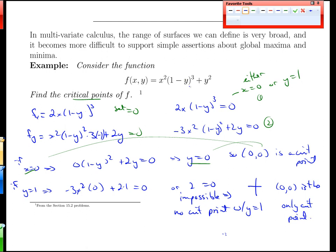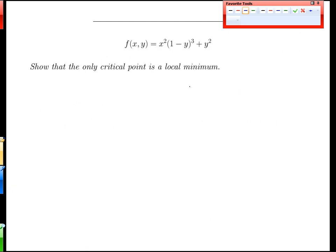Okay, so we have a function with a single critical point at the origin. What could be simpler? Let's take a look at what else we can say here. Let's show that that point is a local minimum. Show that the critical point is a local minimum. Well, for that, we need our second derivatives.